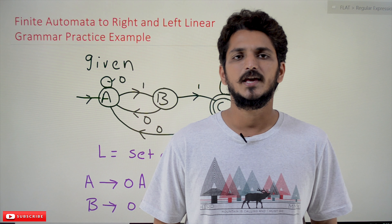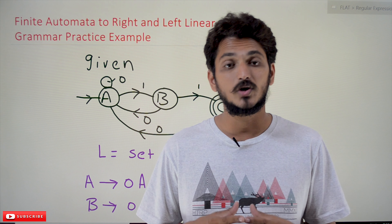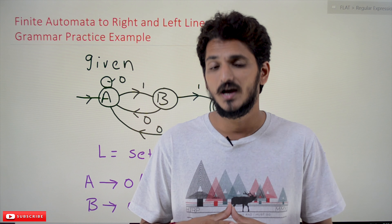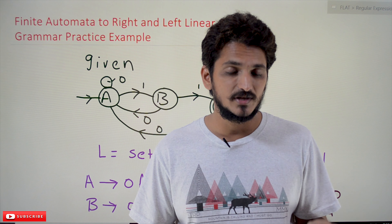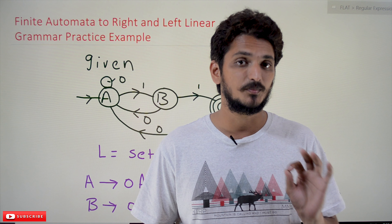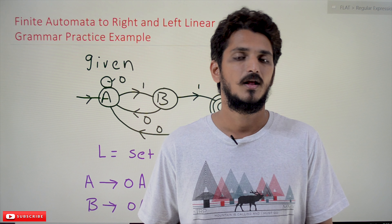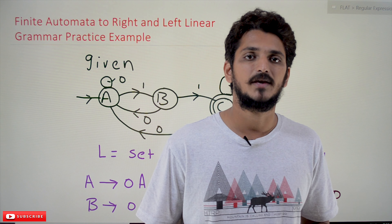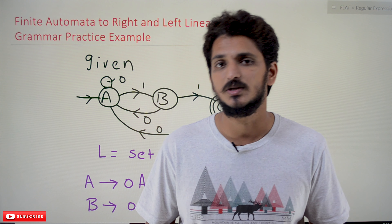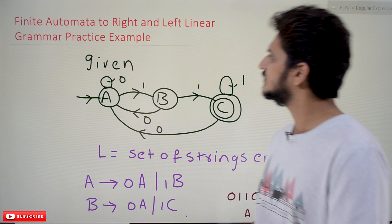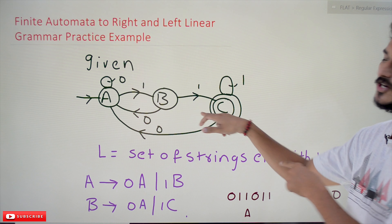Hi, welcome to Learning Monkey. I am Raghur. In this class we will discuss how to convert a given finite automata into right and left linear grammar. In our previous class we already discussed the procedure — this is a practice example. Please watch our previous class and come back here; the link for the playlist is provided in the description below.